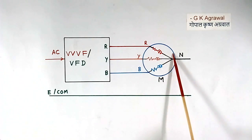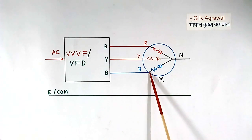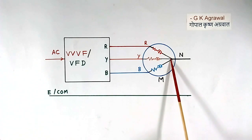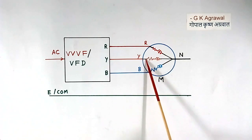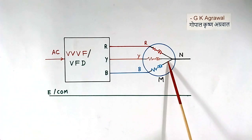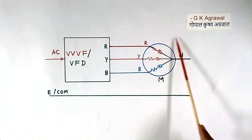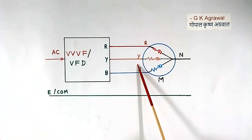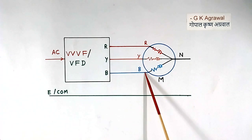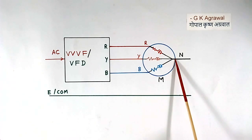This is a 3-phase motor. This is the R phase winding in the motor, this is the Y phase, and this is the B phase winding. The system is working properly. R, Y, B — 3 voltages are coming in, and the voltage of the neutral point will be 0. The system is normal.